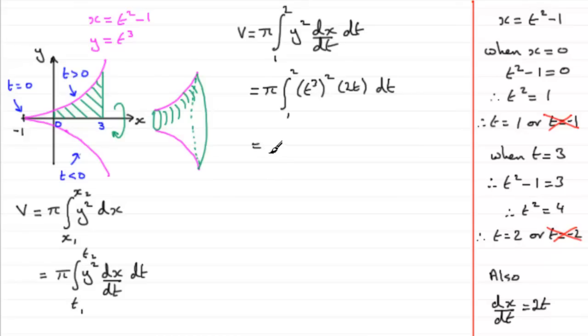Cleaning this up: t⁶ × 2t = 2t⁷. Bringing the 2 out gives 2π ∫₁² t⁷ dt. Integrating: add 1 to the power and divide, giving 2π [t⁸/8] from 1 to 2.